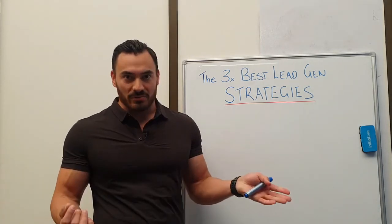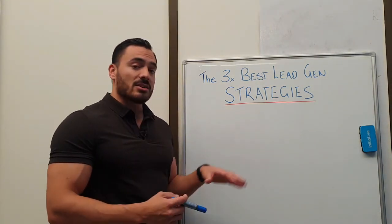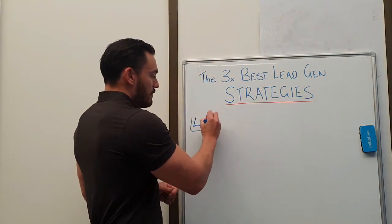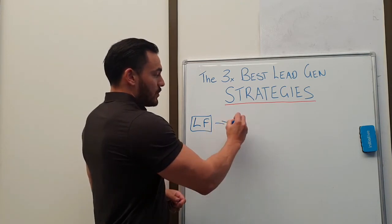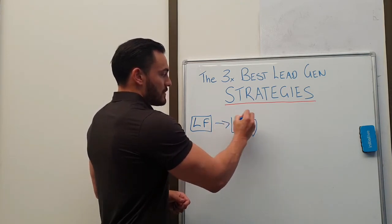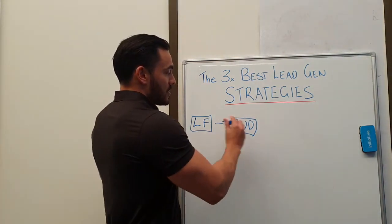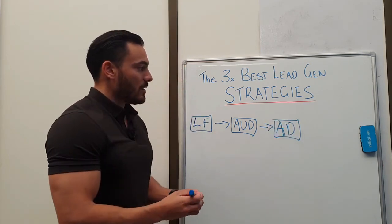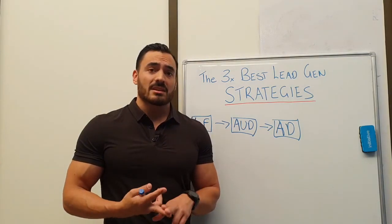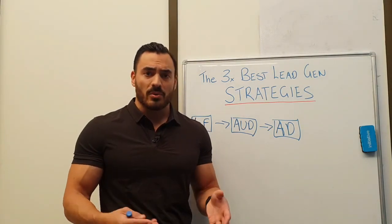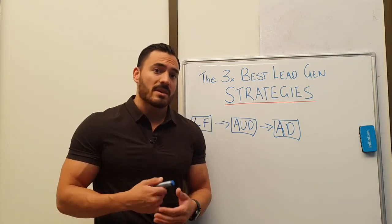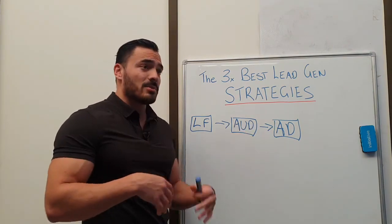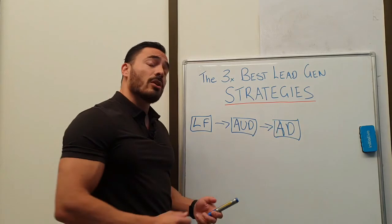I'm going to give you a visual illustration — I'm massive on flowcharts. So this is exactly what it would look like: you choose a lead form campaign objective, then you select your audience, and then you create your ad. With your ad you've got to have good copy, you've got to be calling out pain points. You also select an image or create a video to go in your ad.